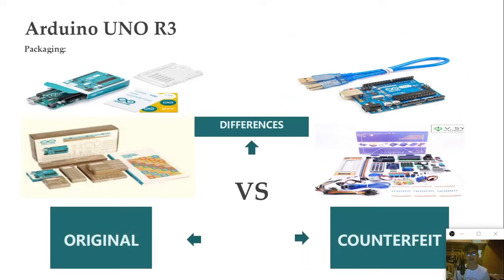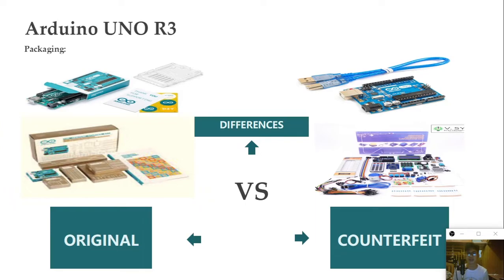First we will talk about its packaging. The original Arduino UNO R3 comes with its box, stickers, and a plastic case. If you buy a kit, it comes with complete packaging where every part has its own box. The counterfeit one has only the Arduino itself and sometimes it is packaged in a sealed plastic with a USB. The counterfeit kit is composed of different parts such as sensors, resistors, connecting wire, USB cable, and some accessories.